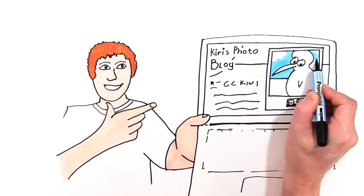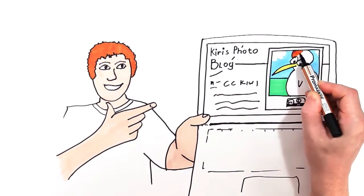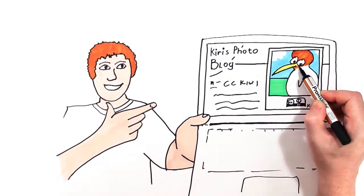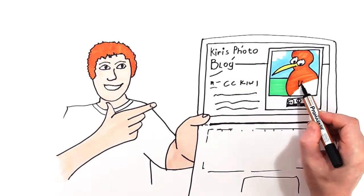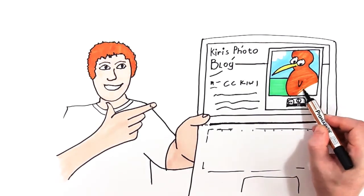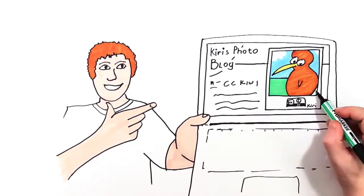Kiri's license is legally robust but easy for Zach to understand. She's told the world, including Zach, that they can use CC Kiwi as long as they acknowledge her as the original photographer.